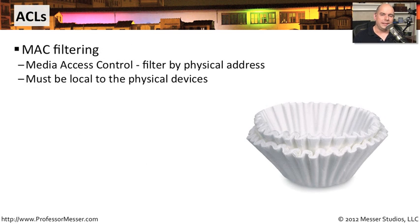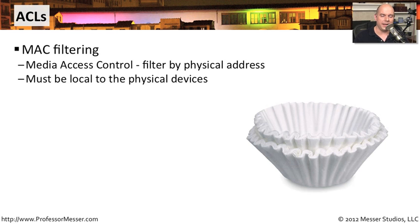Over the network, we tend to implement access control lists in different ways. One common way, especially on wireless networks, is to implement an access control list based on your MAC address — your media access control address, your physical device itself. One challenge with managing things by MAC address is that the device looking at these MAC addresses has to be local to the devices themselves. You can't manage the MAC address of a device that's in another building or another country. They have to be on your local subnet. MAC addresses never leave the local subnet, so the only way to manage them is to be local to those devices.